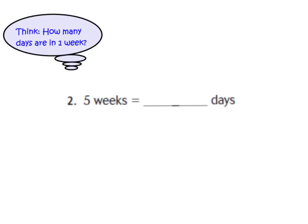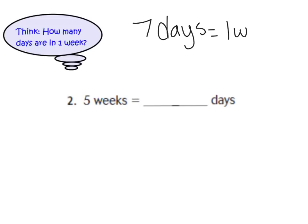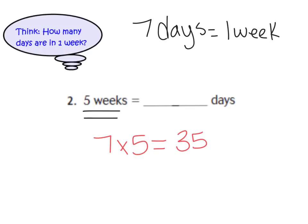Let's look at number two on page 235. Number two is asking us to change five weeks into only days. How many days are in one week? That's right — we have seven days in one week. So, if we have five weeks and there are seven days in each of those weeks, we know that we can multiply seven times five, and that will get us 35. So, there are 35 days in five weeks.